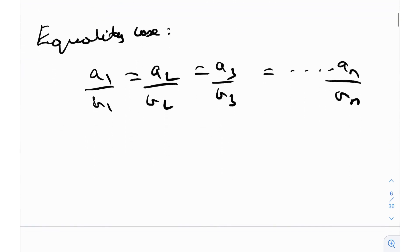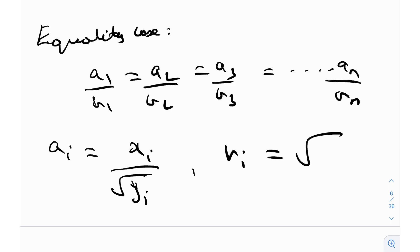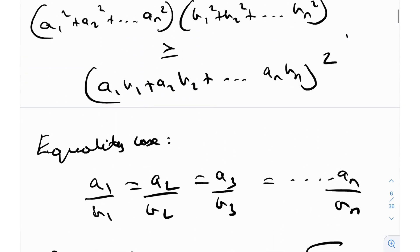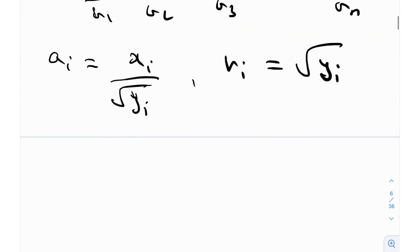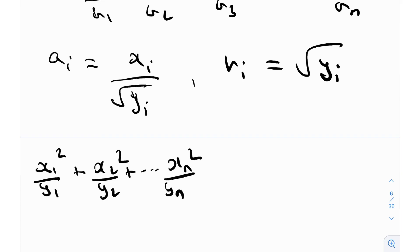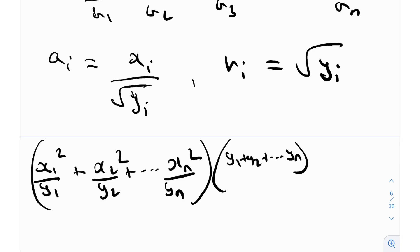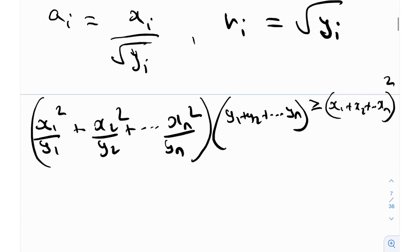Now I'm going to use a substitution. I'll substitute aᵢ with xᵢ divided by √yᵢ, and substitute all bᵢ's with √yᵢ. Substituting into Cauchy-Schwarz, I get (x₁²/y₁ + x₂²/y₂ + … + xₙ²/yₙ) multiplied by (y₁ + y₂ + … + yₙ), which is greater than or equal to (x₁ + x₂ + … + xₙ)².